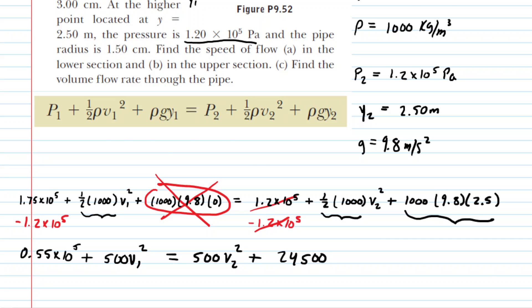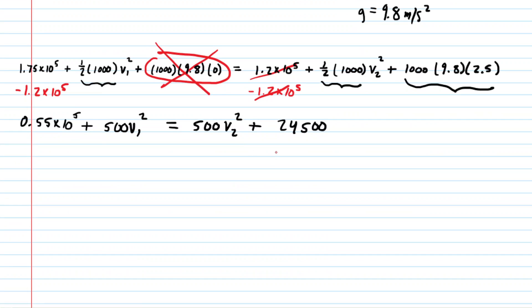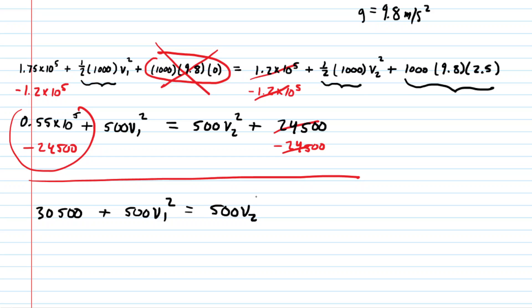So far so good. We're going to continue rearranging the equation. Perhaps we can subtract that 24,500 from both sides. And then you could pick up a calculator and subtract those two values right there. You end up with 30,500. Now, we're going to next subtract the 500 v sub 1 squared. So we'll go ahead and do that on both sides.